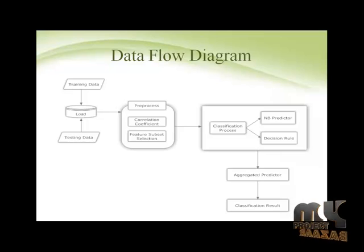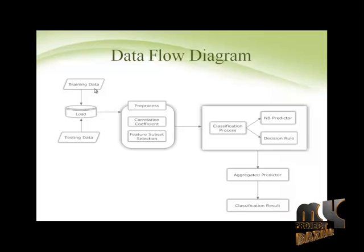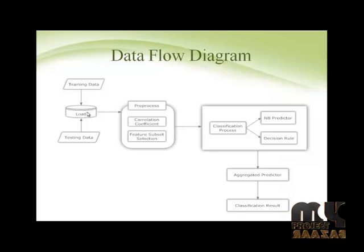Now going to explain the data flow diagram. First we establish the testing dataset. Our empirical study uses a real-world dataset — network traffic traces named WIDE traffic flows, randomly selected from the WIDE dataset. The first step is to load the dataset into the database, which is then used for the classification process. All classification processes begin with preprocessing.